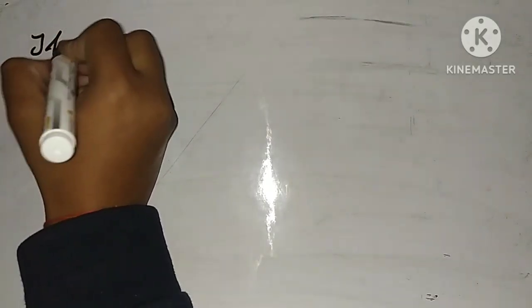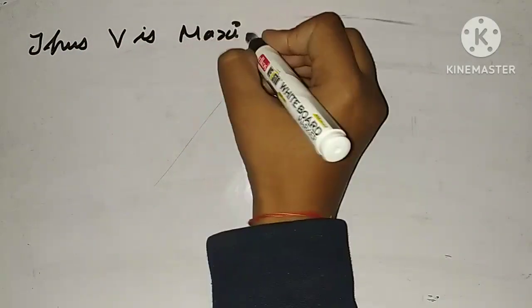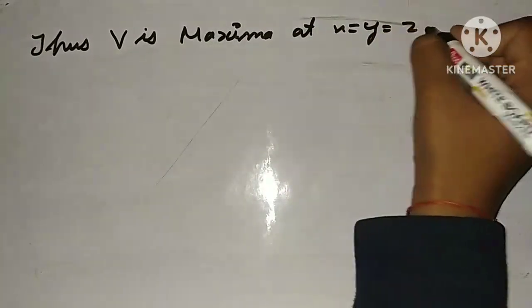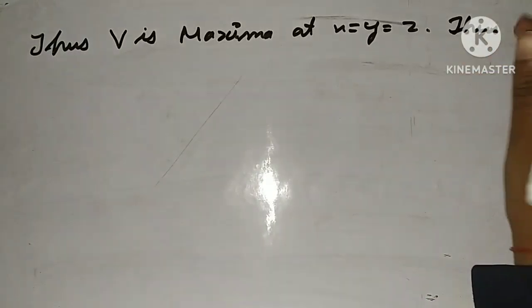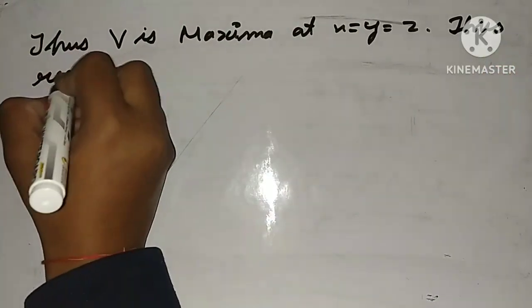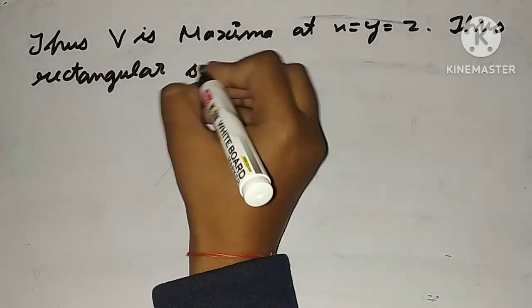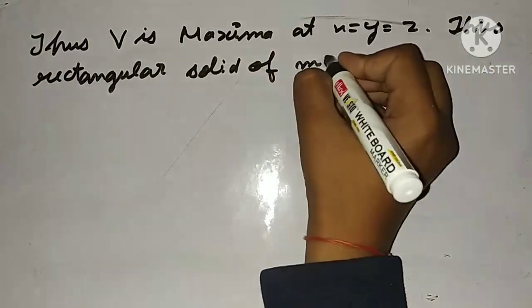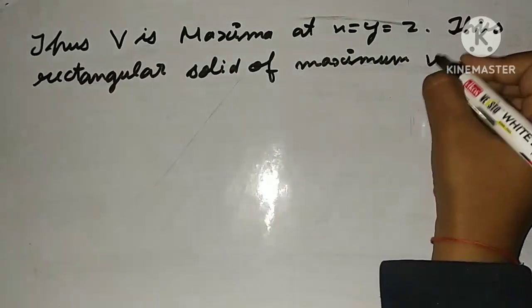Thus V is maximum at x = y = z. Therefore, the rectangular solid of maximum volume inscribed in a sphere is a cube.